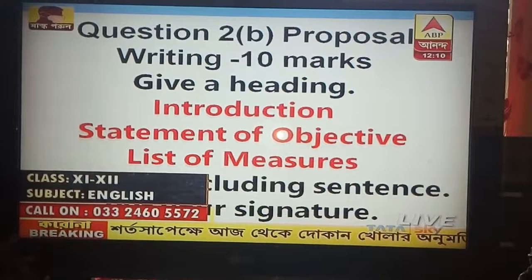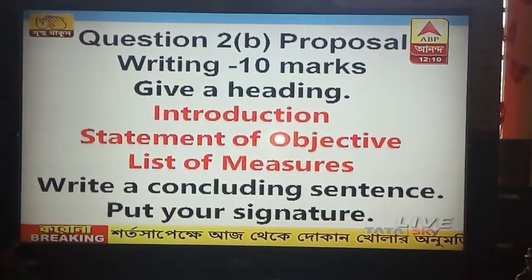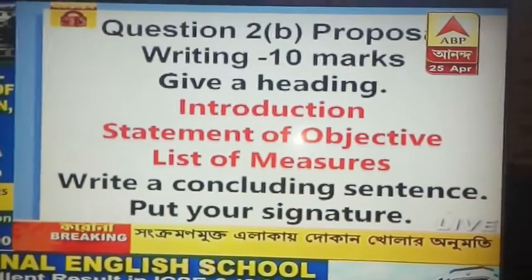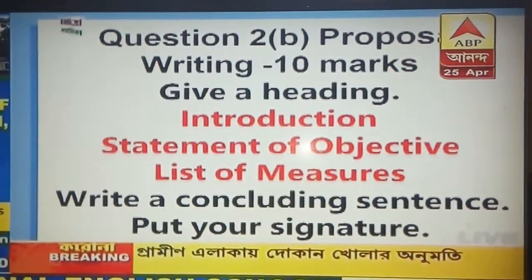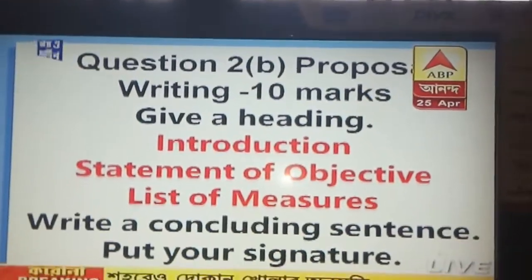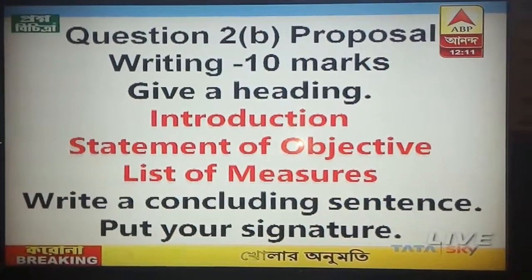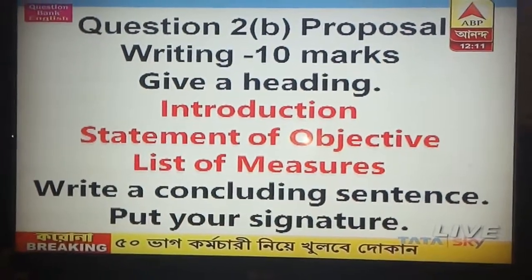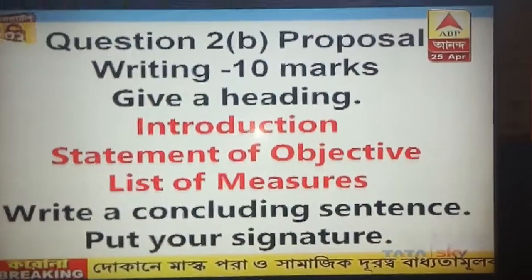The things written in black are the things you have to include in the proposal without writing 'give a heading' — you just give a heading. But those three in red — introduction, statement of objectives, and list of measures — these are the three subheadings that you will need to write. So you write introduction, then statement of objectives, then list of measures, end with a concluding sentence, and finally put your signature. That is how you attempt a proposal writing question.